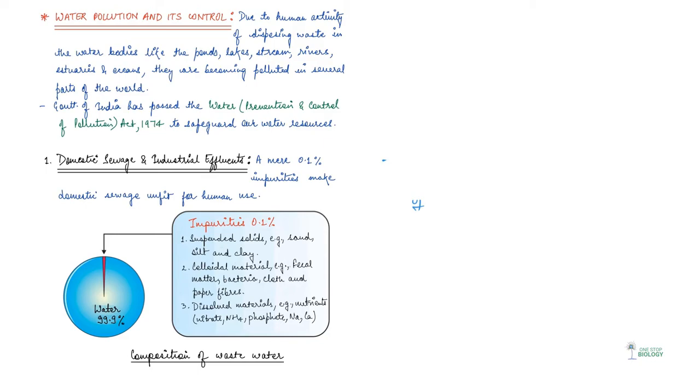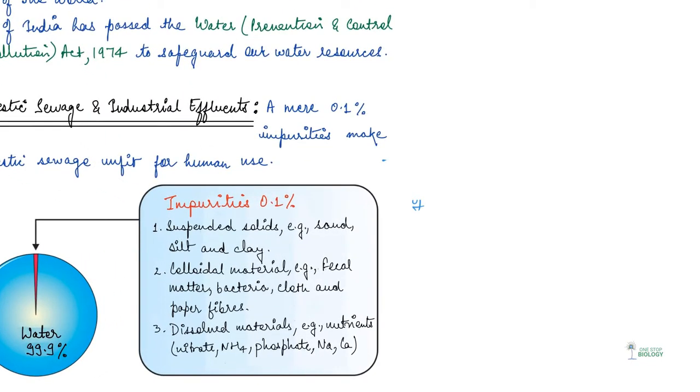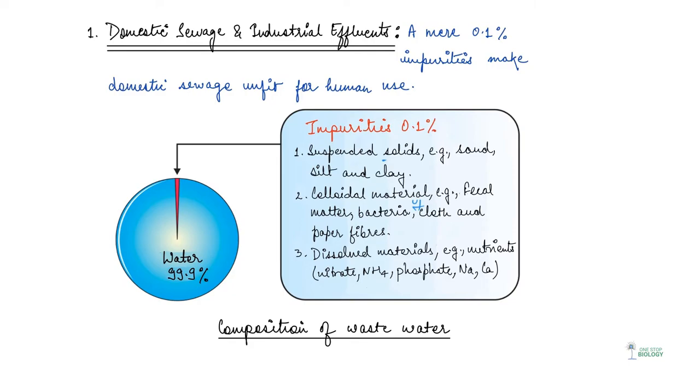And these drainage systems are basically passed on to the local water bodies. So if there are ponds, if there are rivers or there is a sea nearby, everything that is there in the sewage system of that particular city or village or town, it is passed on to that water body. And what we say is that a mere 0.1% impurity makes domestic sewage unfit for human use.